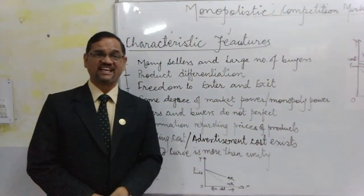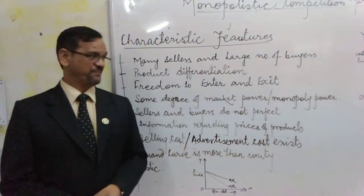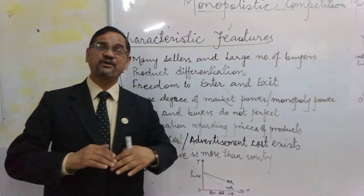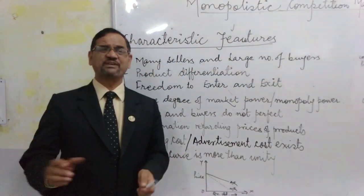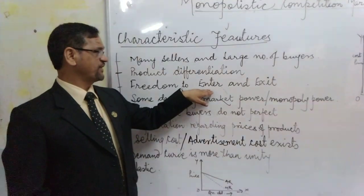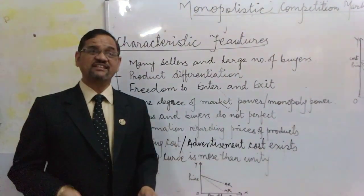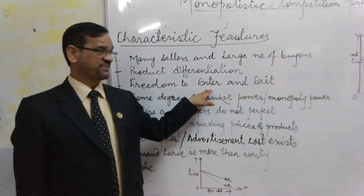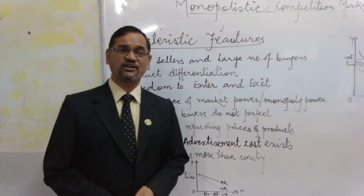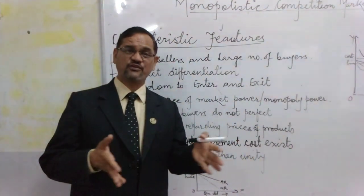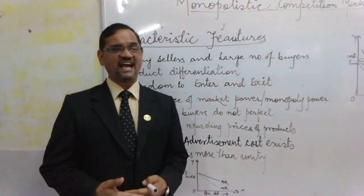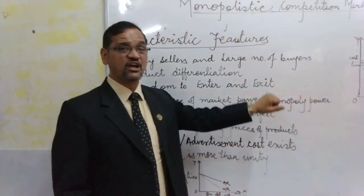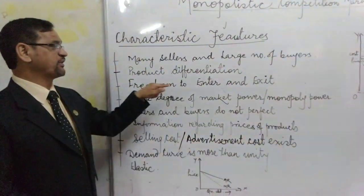There is freedom to enter and exit — any firm can enter or leave the market anytime. When an industry is making super normal profits, many more firms enter the market. More firms mean supply increases; demand being the same, prices come down and they return to normal profits. Similarly, when firms are facing losses, many firms leave the industry. When they leave, supply becomes less and demand is the same, so prices start increasing and firms return to normal profits.